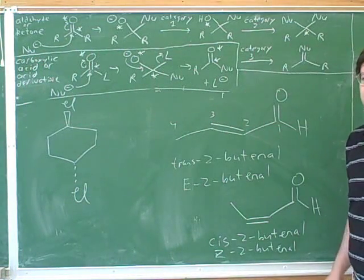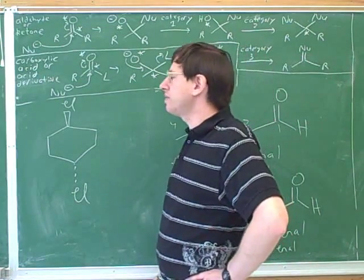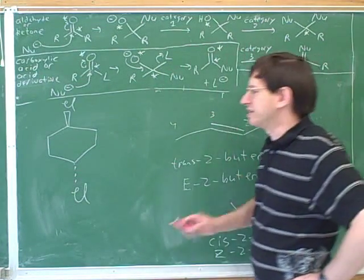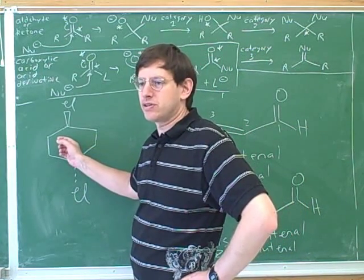How would you name this? Six trans. Yeah. So E and Z only applies to double bonds. It doesn't apply to rings. So this is the one case where you must use cis or trans.